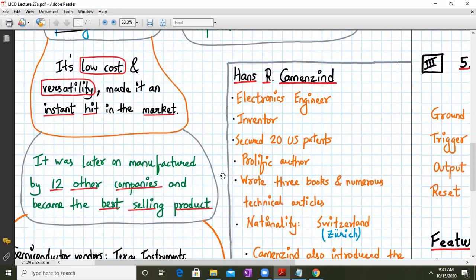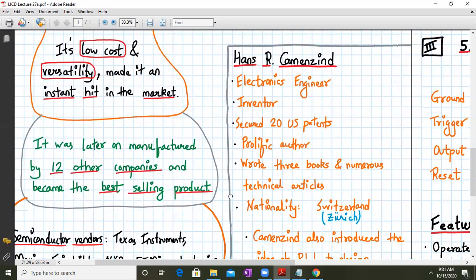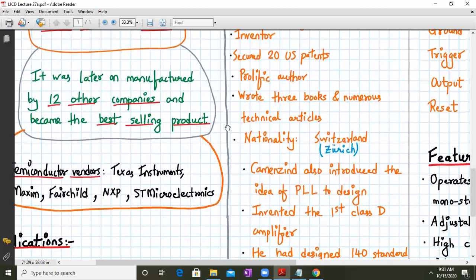So he was an electronic engineer and inventor. He secured over 20 US patents in his era. He was a prolific author, wrote three books and numerous technical articles. His nationality was Switzerland, Zurich.